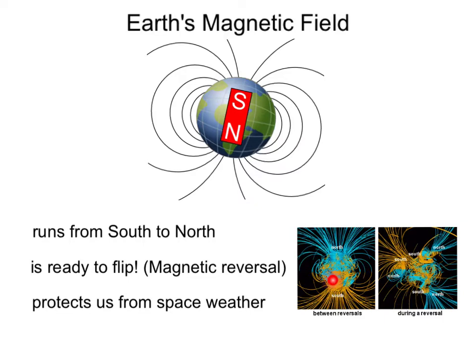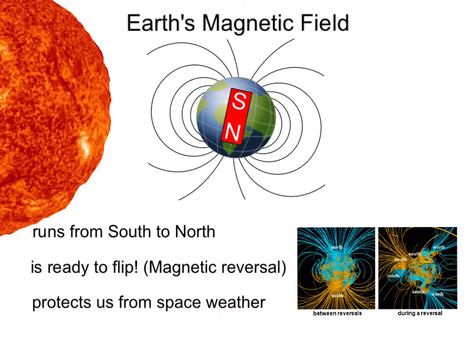During a reversal, it is possible that it will have multiple poles or a quadrupole field around the Earth. The Earth's magnetic field is important because it protects us from space weather. Well, what's our nearest source of space weather? Well, that would be the sun.